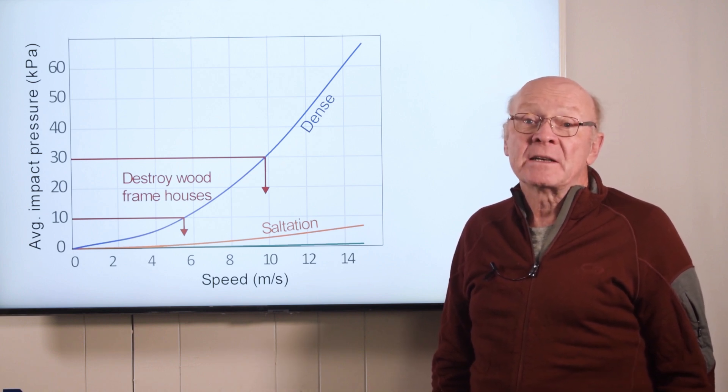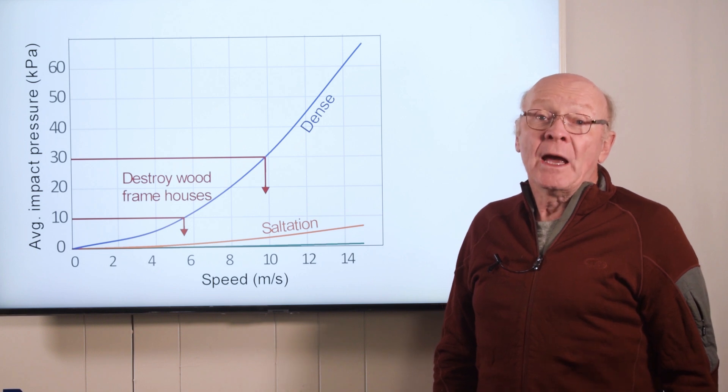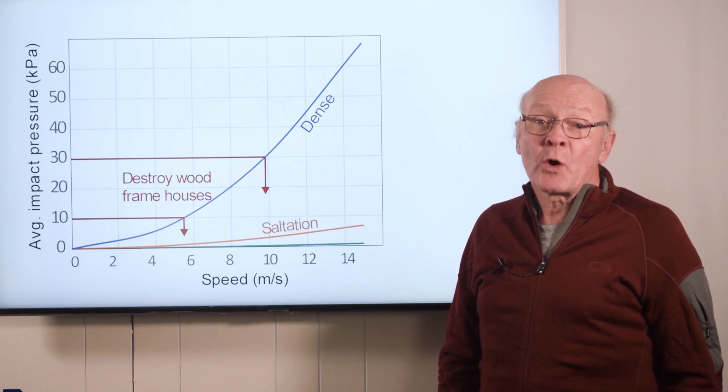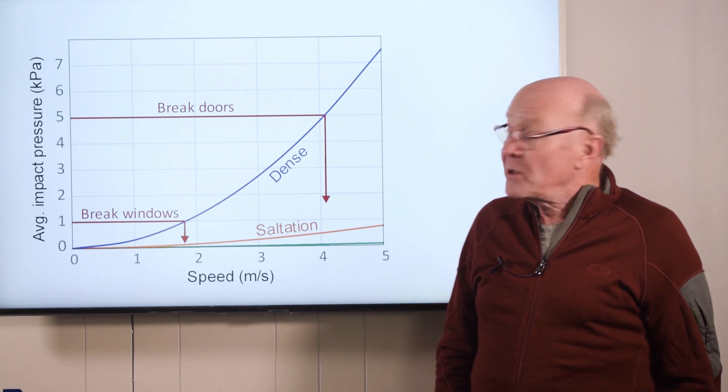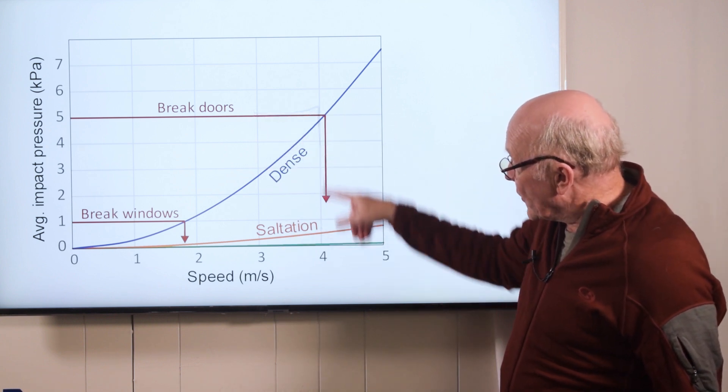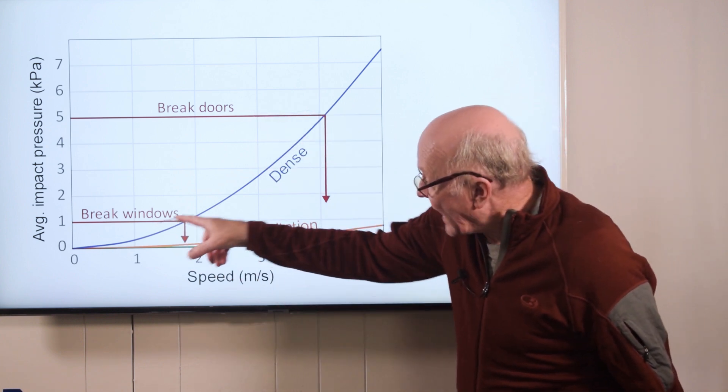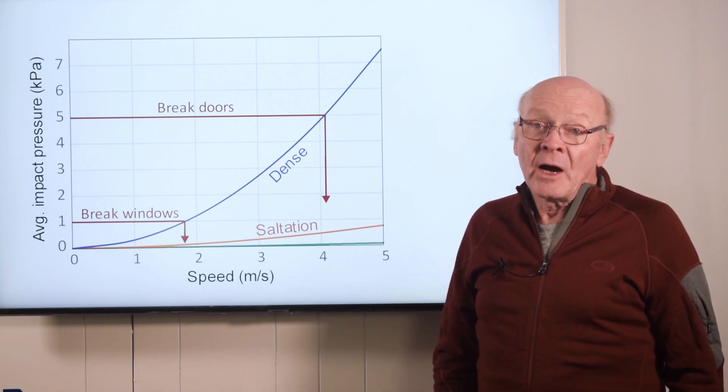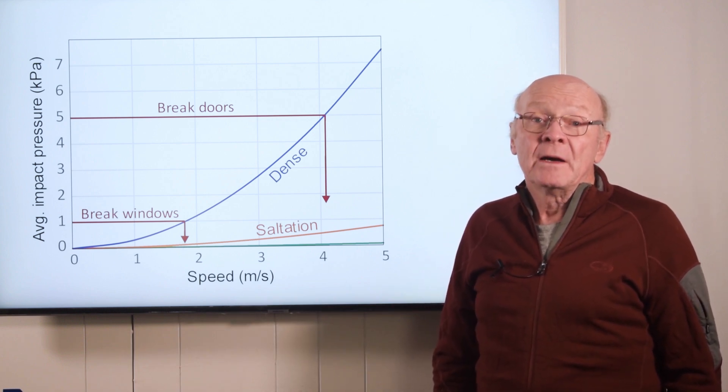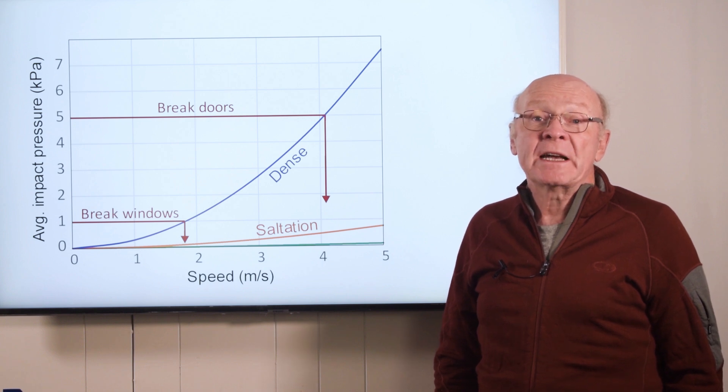To see damage such as breaking doors and windows, we have to zoom in to the lower left corner even more. Now we see the dense flow can break doors at about 4 meters per second and break windows at about 2 meters per second. Although you can't see it on this graph, the powder cloud has to reach a speed of about 20 meters per second to break windows.